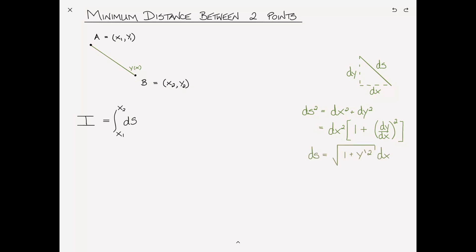Factoring dx² out as a common factor, we can write it as dx² times [1 + (dy/dx)²]. And then taking the square root of both sides, ds is equal to square root of 1 plus y prime squared, y prime for short, dx.